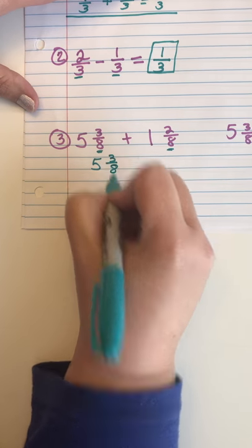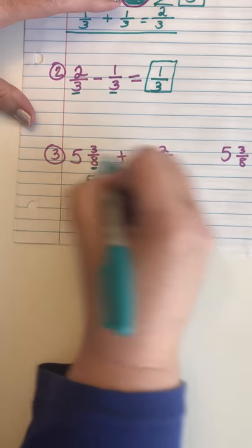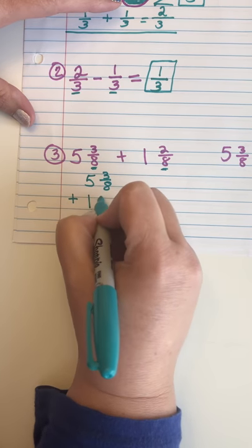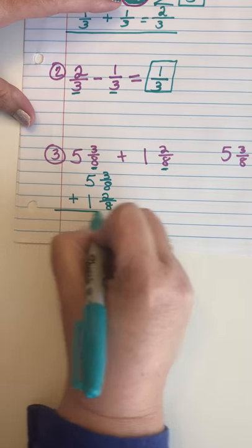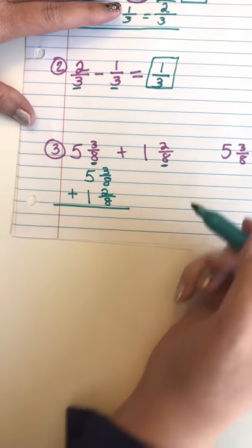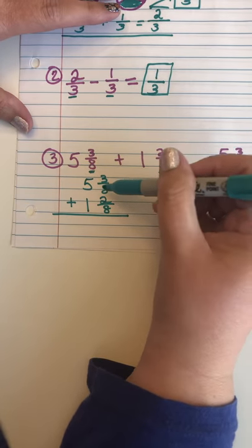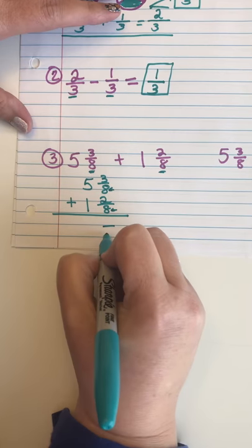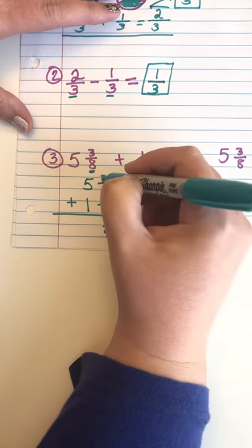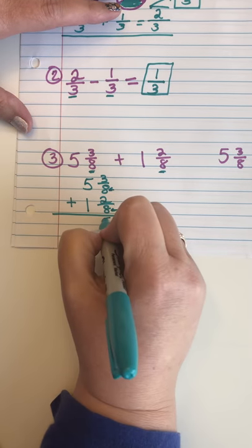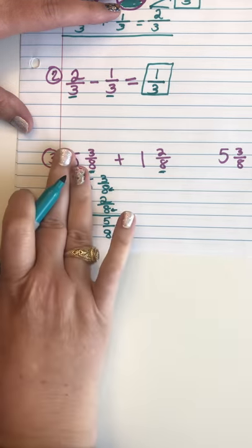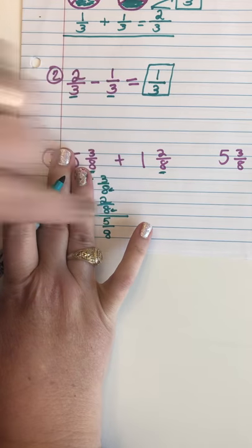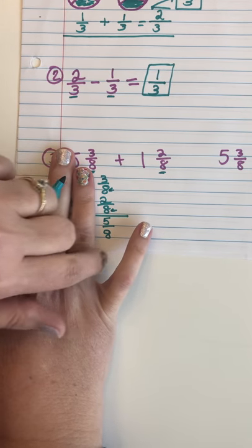The first thing you want to do with mixed numbers is write it vertically — it makes it much clearer. So five and three-eighths, I'm just taking my same problem and writing it up and down. Plus one and two-eighths. My denominators are the same, so they're not going to change — I'll bring that denominator down as an eight. Then three plus two is five, so that's my numerator. You're almost pretending the whole numbers aren't there yet and just working with the fraction piece first.